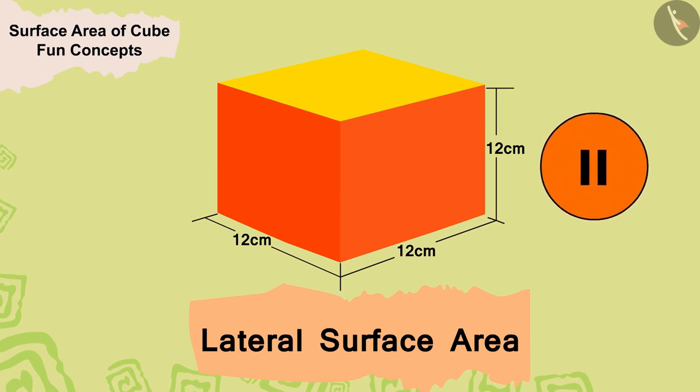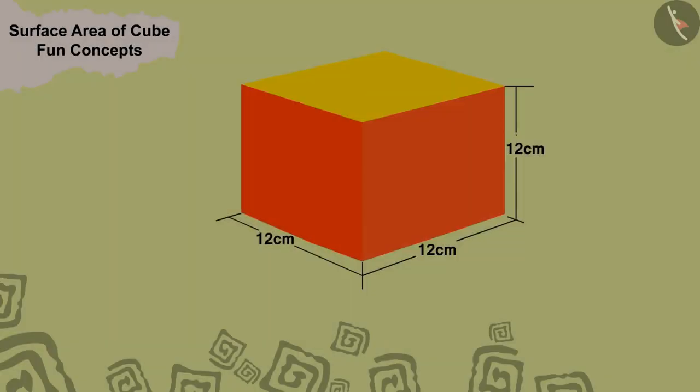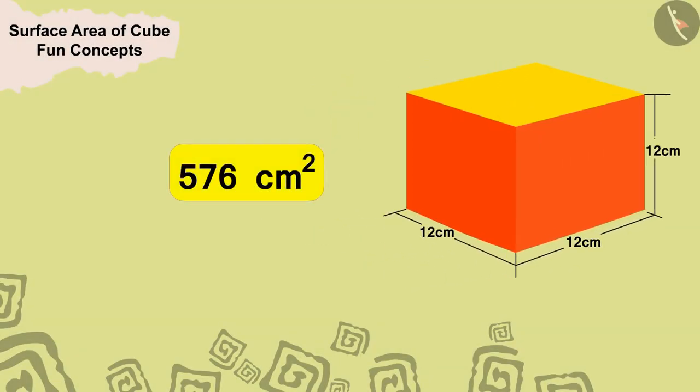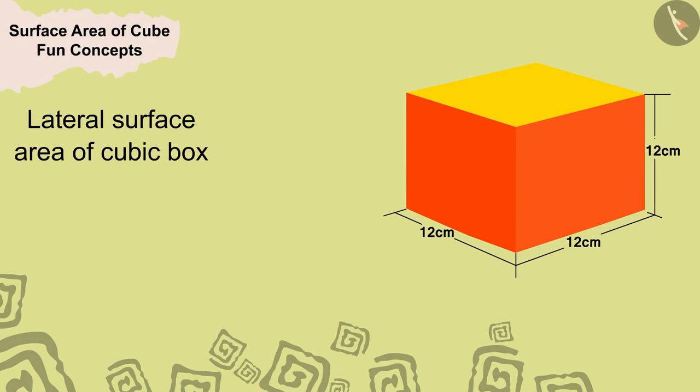Wow, guys, your answer is absolutely correct. The lateral surface area of Thomas's cubic box is four times the square of the length, four times the square of twelve, meaning 576 square centimeters.